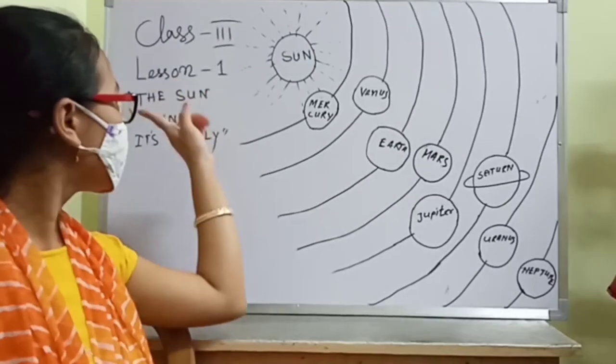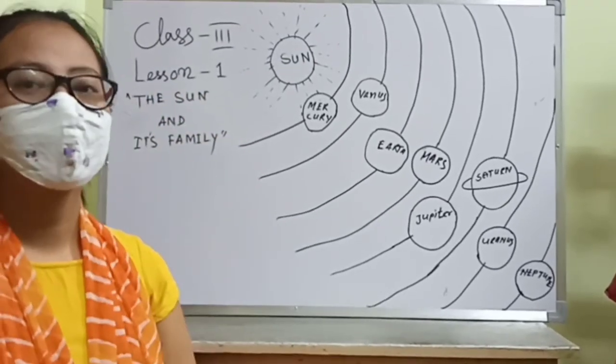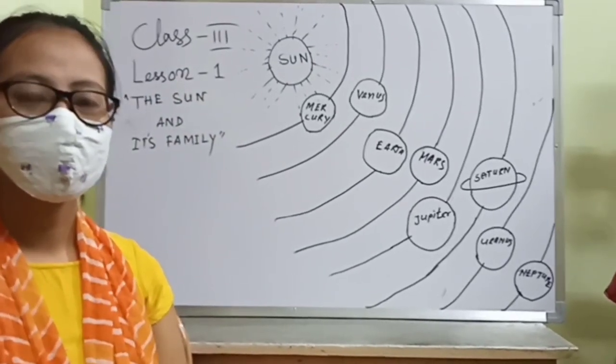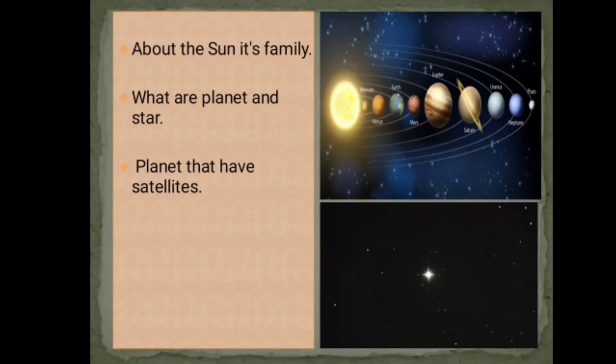In this chapter we will learn about the Sun and its family, what are planets and stars, and that planets have satellites.